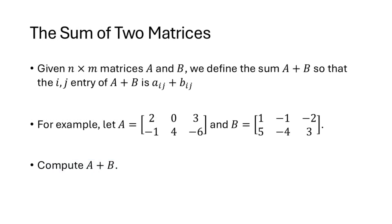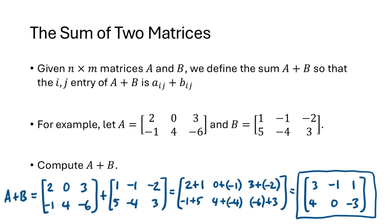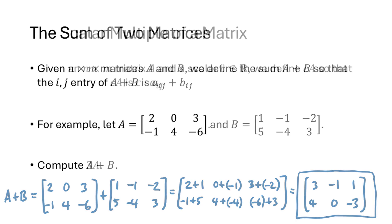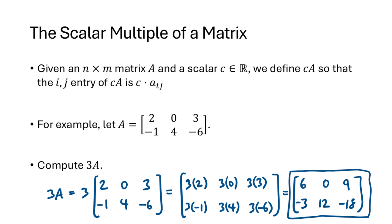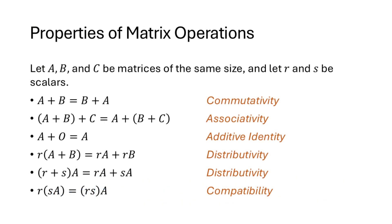To add two matrices, they must have the same size, and we add corresponding entries: the i,j entry of A plus B is A_ij plus B_ij. For example, adding two 2×3 matrices means adding each pair of corresponding entries. To multiply a matrix by a scalar, we multiply each entry by that scalar, so the i,j entry of cA is c times A_ij. These operations satisfy nice algebraic properties — commutativity, associativity, and so on — so we can use our usual algebraic intuition.